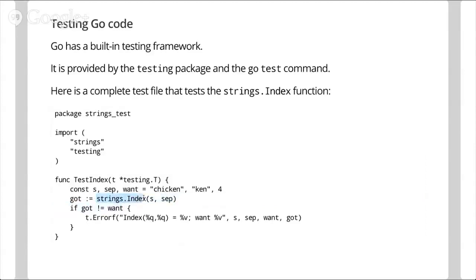The test calls strings.Index, passing in the string and the substring, and you get the expected result in the got variable, compare it with the value that you wanted, and then use the T argument to report an error if it doesn't match. You just write tests in Go as normal Go functions.